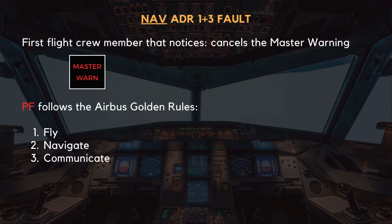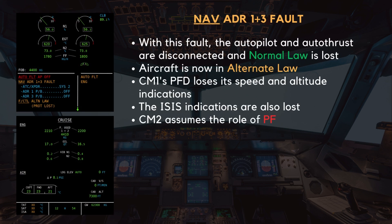The first flight crew member that notices cancels the master warning. The pilot flying should follow the Airbus golden rules of fly, navigate, and communicate. In this instance, the autopilot and autothrust have both disconnected, so the pilot flying will be manually flying the aircraft. With this fault, the autopilot and autothrust are disconnected and normal law is lost. The aircraft is now in alternate law.